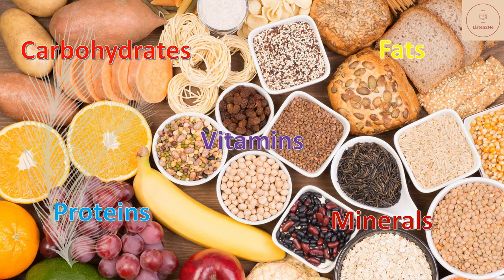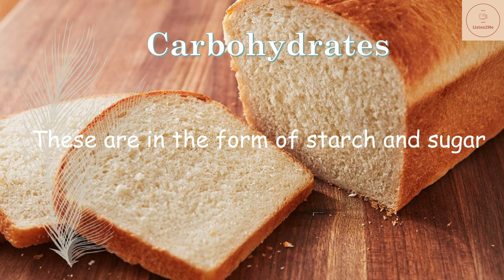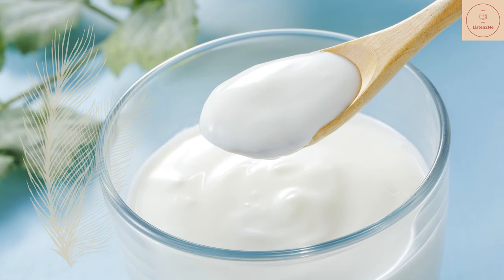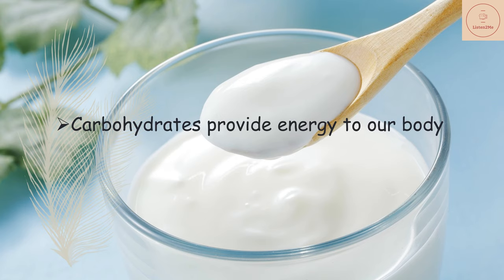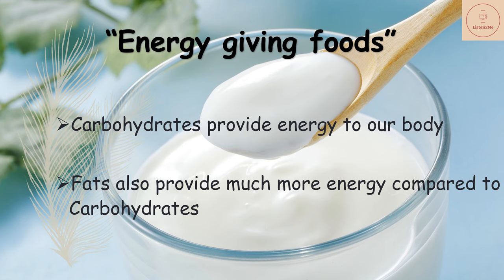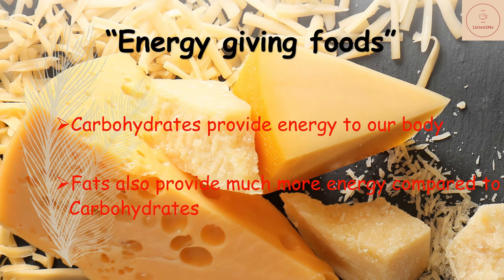First are carbohydrates and fats. Carbohydrates are in the form of starch and sugar in our food. Carbohydrate-rich foods are potatoes, corn, bread, milk, yogurt, etc. Carbohydrates mainly provide energy to our body. Fats also provide us energy and give much more energy compared to carbohydrates. Hence, food containing fats and carbohydrates are called energy-giving food. Food rich in fat are butter, soya bean, cheese, etc.